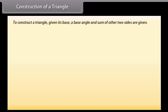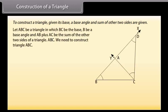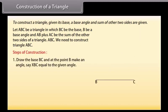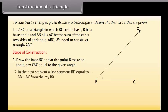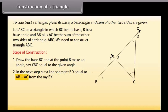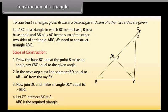To construct a triangle given its base, a base angle, and the sum of the other two sides. Let ABC be a triangle in which BC is the base, B is the base angle, and AB plus AC is the sum of the other two sides. We need to construct triangle ABC. Steps of construction: Draw the base BC and at point B make an angle XBC equal to the given angle. Cut a line segment BD equal to AB plus AC from the ray BX. Join DC and make an angle DCY equal to angle BDC. Let CY intersect BX at A. Then ABC is the required triangle.